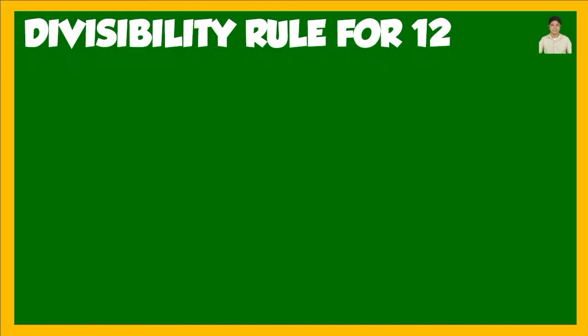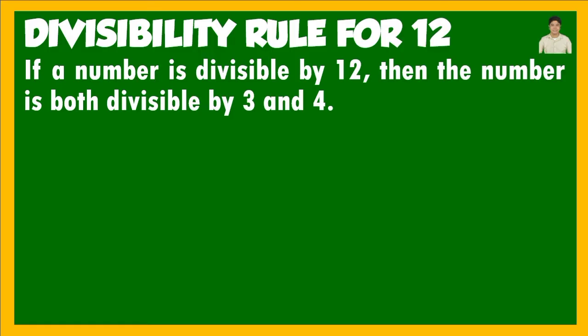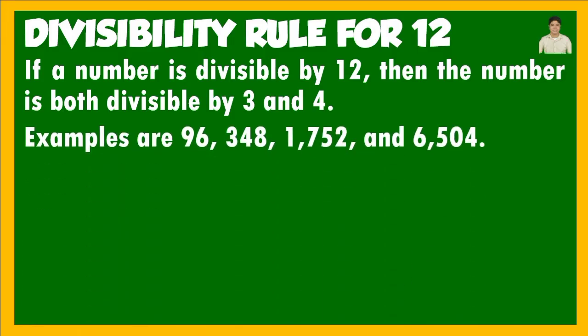Next, the divisibility rule for 12. If a number is divisible by 12, then the number is both divisible by 3 and 4. Here we consider two divisibility rules at the same time — for 3 and for 4. Examples are 96, 348, 1,752, and 6,504.